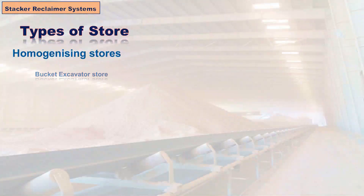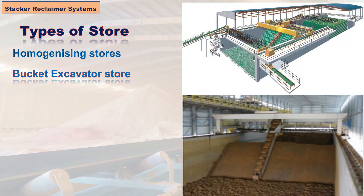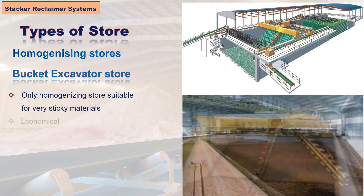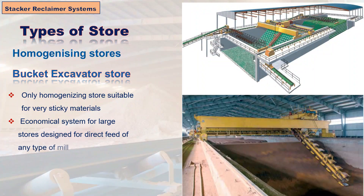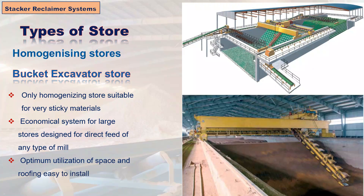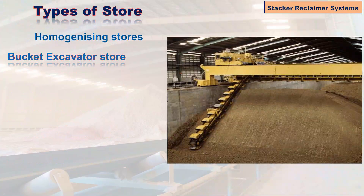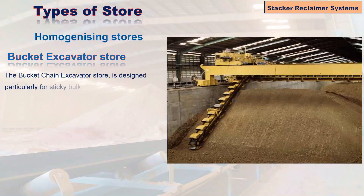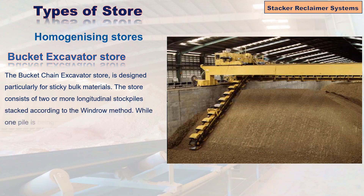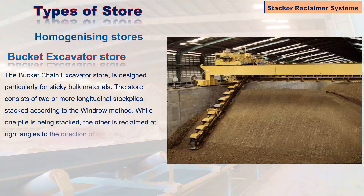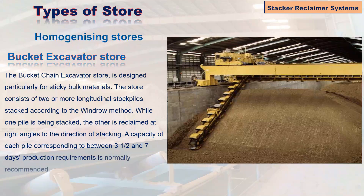The bucket excavator store's most important advantages are: it is the only homogenizing store suitable for very sticky materials, it is an economical system for large stores designed for direct feed of any type of mill, and it offers optimum utilization of space with easy installation. The bucket chain excavator store is designed particularly for sticky bulk materials. The store consists of two or more longitudinal stockpiles stacked according to the windrow method. While one pile is being stacked, the other is reclaimed at right angles to the direction of stacking. Each pile capacity corresponds to three and a half to seven days production requirements.